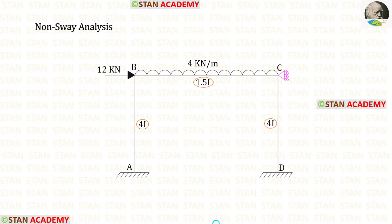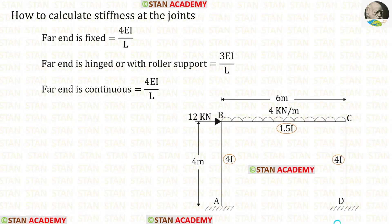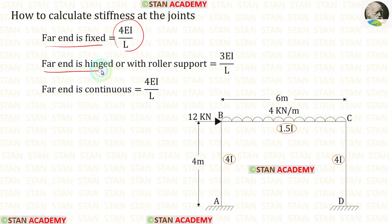In this analysis we assume that at point C there is a roller support to avoid the sway. In the moment distribution method we have to find the distribution factor, and to find that we have to calculate the stiffness. If the far end is fixed the formula is 4EI upon L. If the far end is hinged or with roller support the formula is 3EI upon L. If the far end is continuous the formula is 4EI upon L.